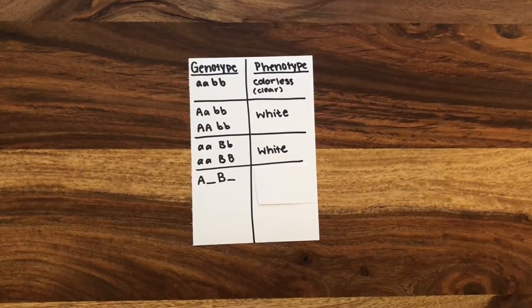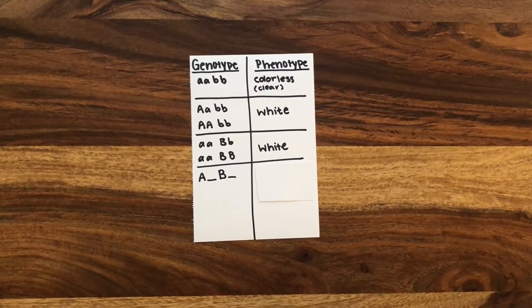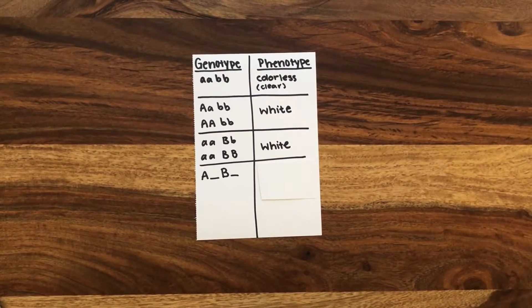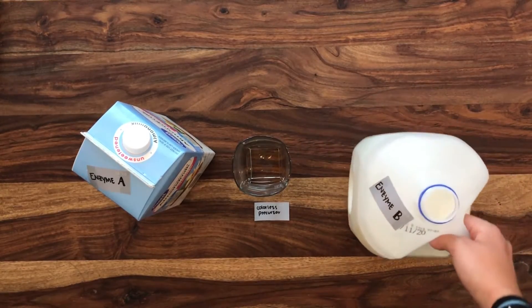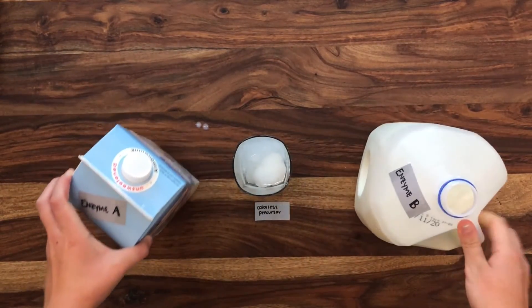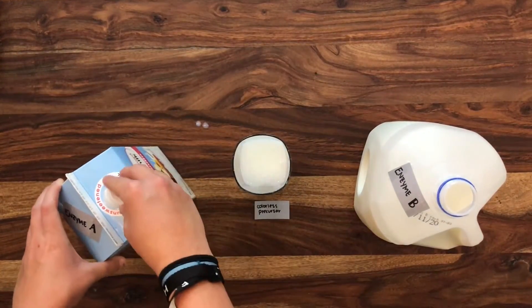Lastly, if at least one uppercase A allele is present, and at least one uppercase B allele is present, both enzyme A and enzyme B are produced in the individual, still producing that same white phenotype in the glass.